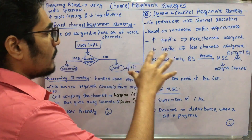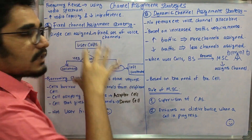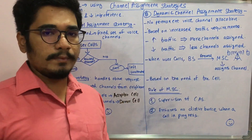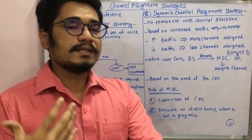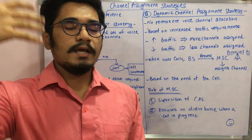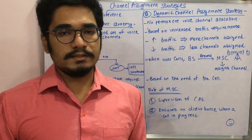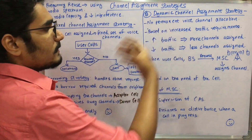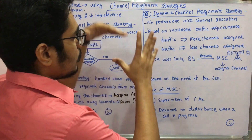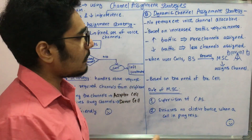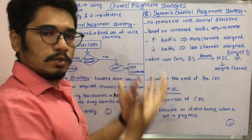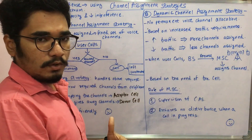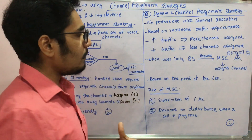Instead, we use the dynamic channel assignment strategy. Here there is no permanent voice channel allocation. Assignment is based on increased traffic requirements — channels are allocated dynamically as and when the requirement arises. If traffic increases, more channels are assigned; if traffic is low, fewer channels are assigned.